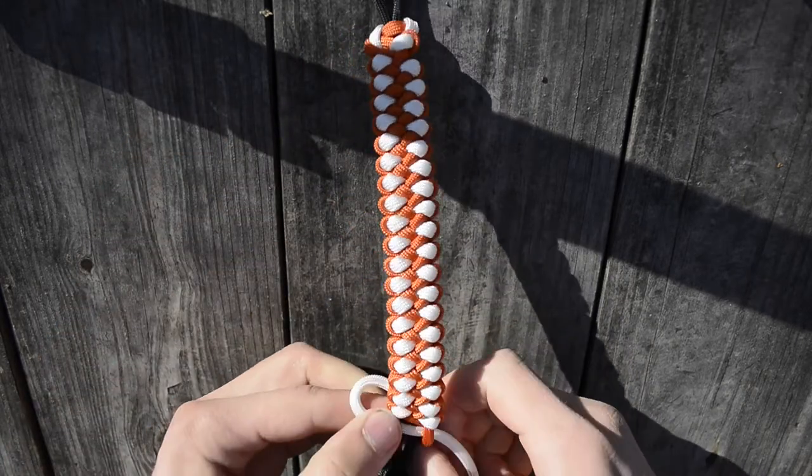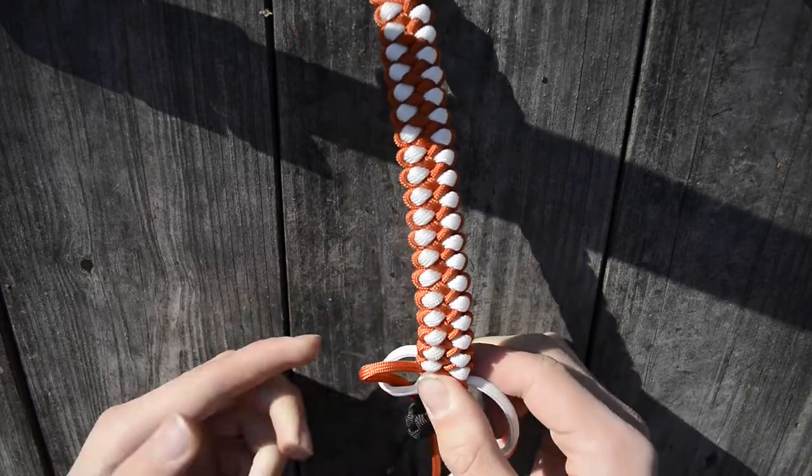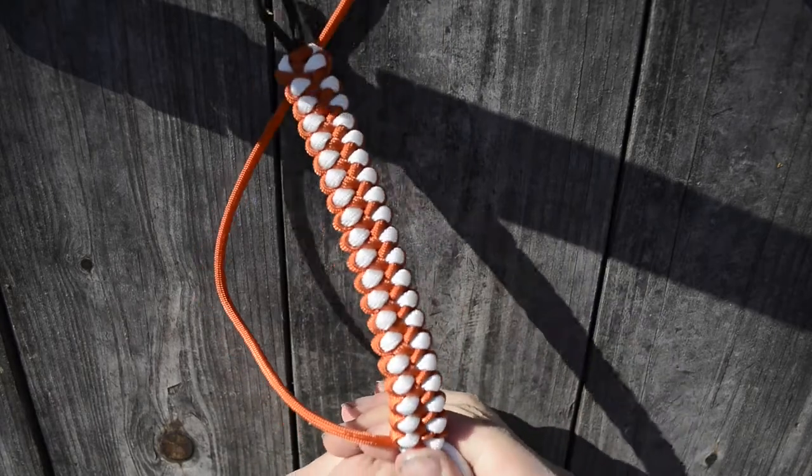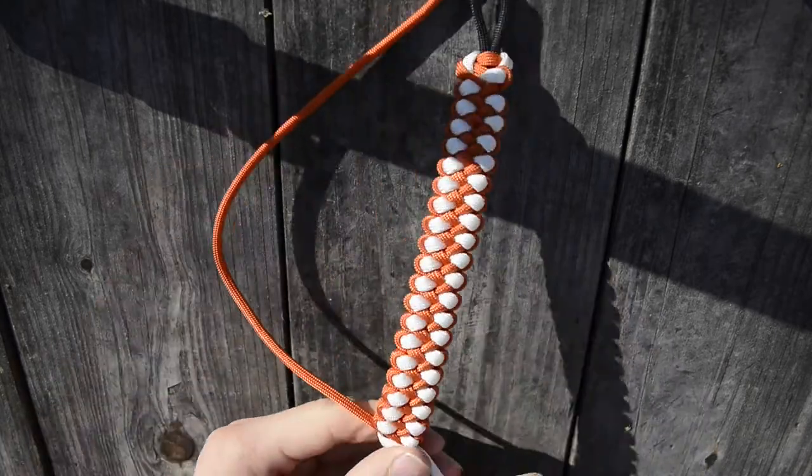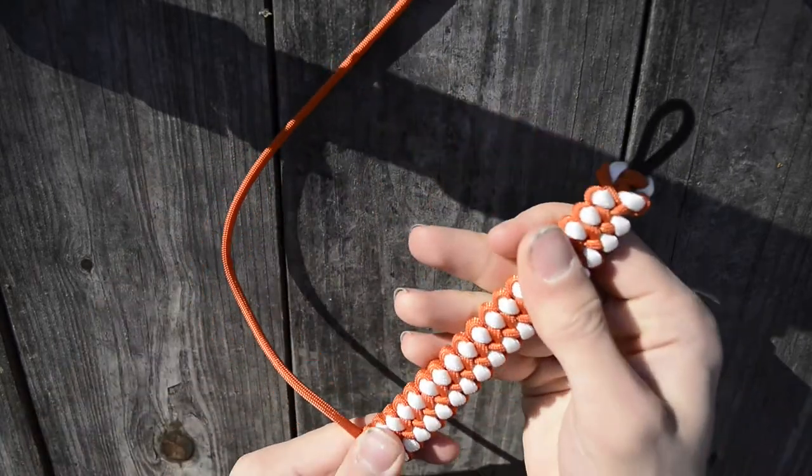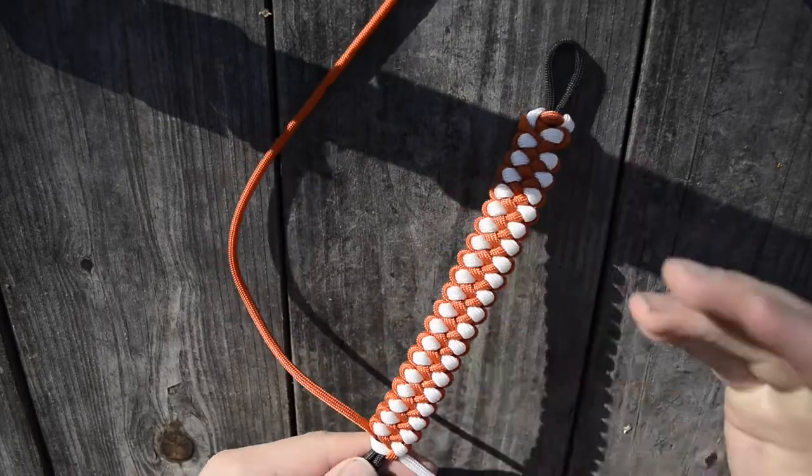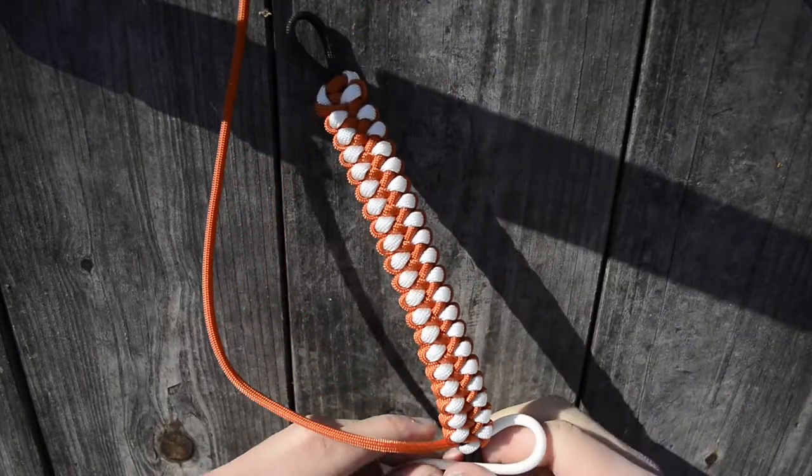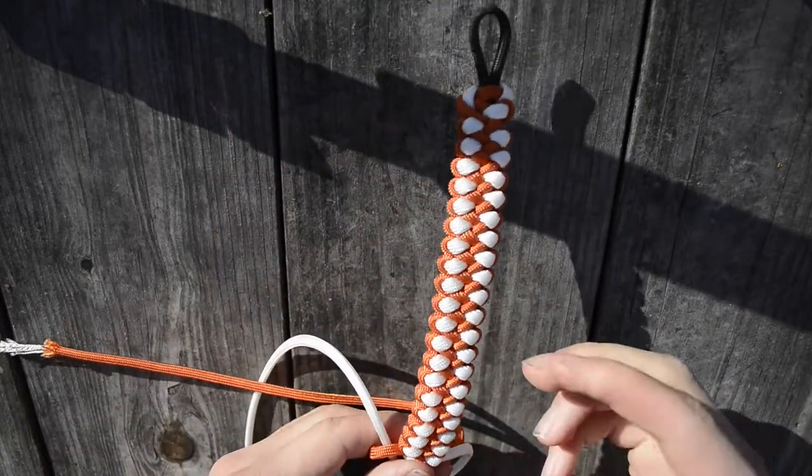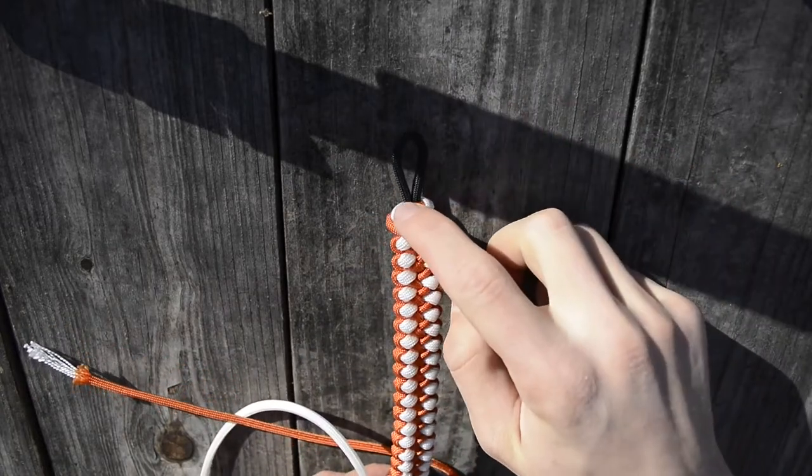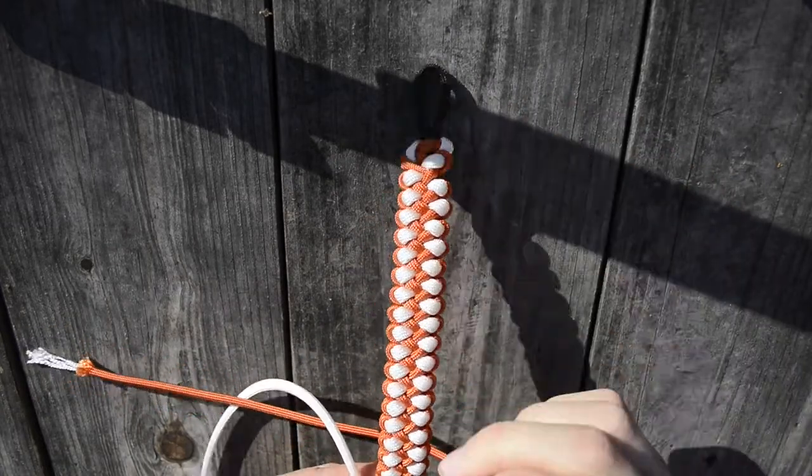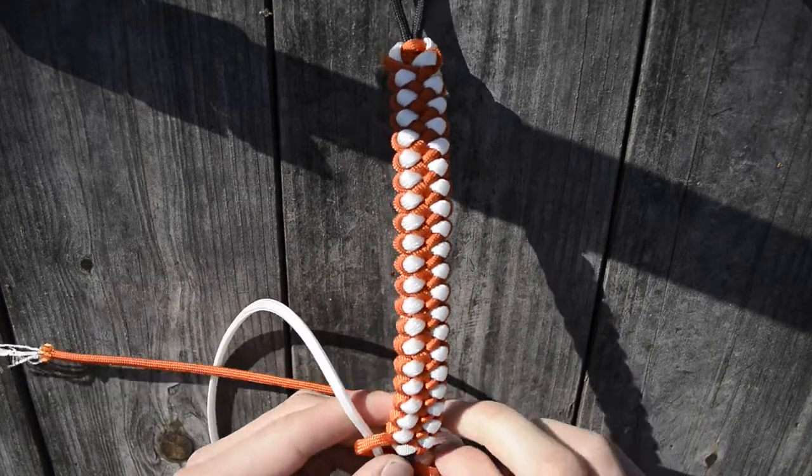And then what you want to do is do two cobra weaves. And so once again, assuming you already know how to do a cobra weave, you want to do two of them to end this bracelet. And it's important, if you want this bracelet to look nice and pretty, you want to do these two weaves nice and hard, so that basically, you have two cobra weaves here, holding nice and hard, and you have two here, holding nice and hard.